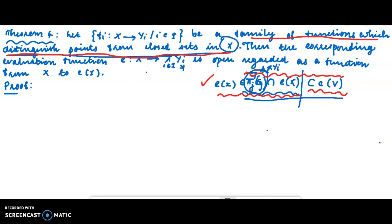Hello students, we are coming to the last part of the theorem. E is open when regarded as a function from X to E of X. Given the evaluation function E of a family of functions distinguishing points from closed sets, to prove that a function is open, it is enough to prove that images of open sets are open.